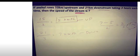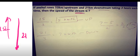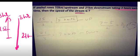The problem states that a boat goes 50 km upstream and 21 km downstream, then 15 km upstream and 21 km downstream, and it takes 3 hours each time. Here it takes 3 hours to travel more because the speed will go down.